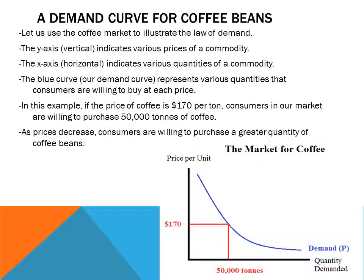Let's take a look at a graphical demand curve for the coffee bean market. The y-axis, or the vertical axis, will indicate various prices of a commodity. The x-axis in economics indicates various quantities of a commodity. The blue curve, also known as the demand curve, represents various quantities that consumers are willing to buy at each given price. In this example, if the price of coffee is $170 per ton, consumers in our market are willing to purchase 50,000 tons of coffee. As price decreases, consumers are willing to purchase a greater quantity of coffee beans.